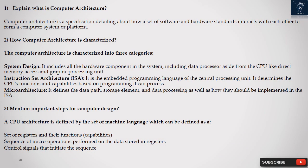Question 1: Explain what is Computer Architecture? Computer Architecture is a specification detailing about how a set of software and hardware standards interacts with each other to form a computer system or platform.